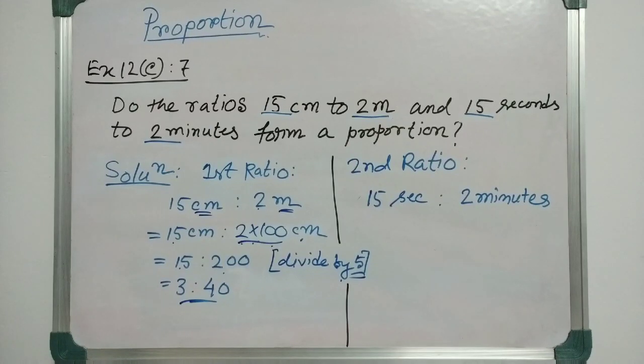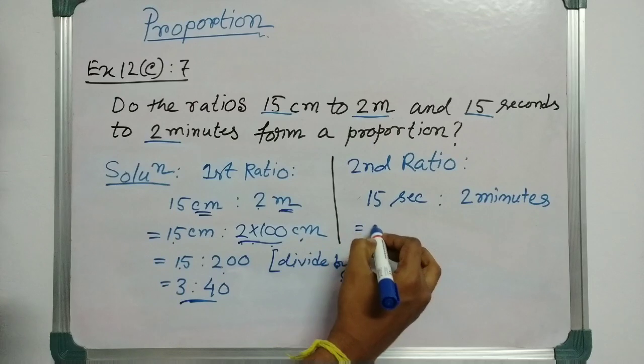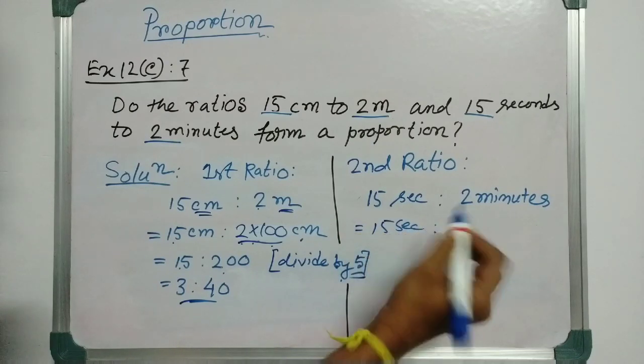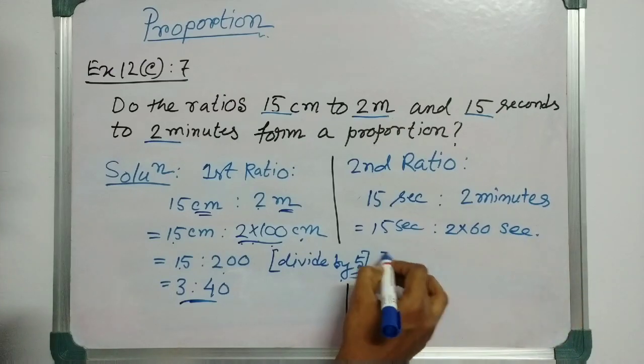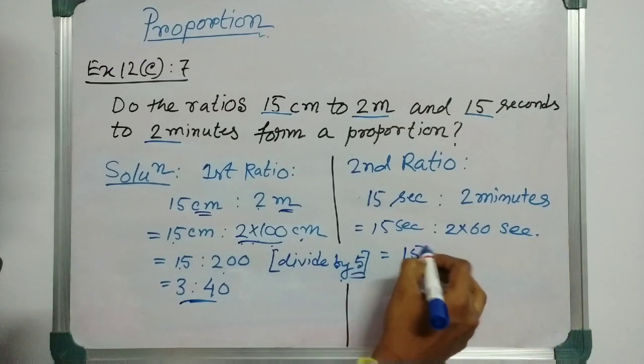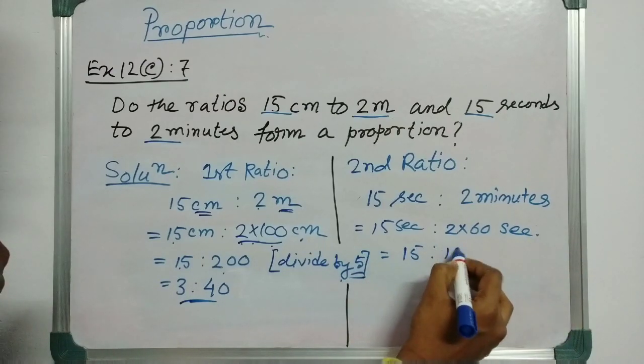The next one is 15 seconds to 2 minutes. Since these two units are not same, we are converting 2 minutes into seconds. So, this is equal to 15 seconds is to 2 into 60 seconds. This is 15 and 2 into 60 is 120.